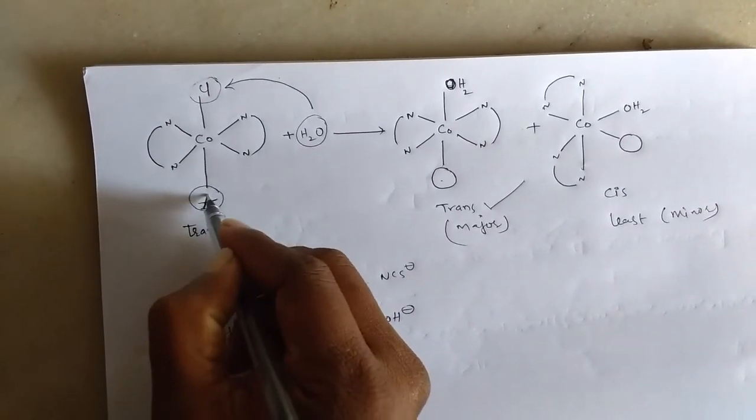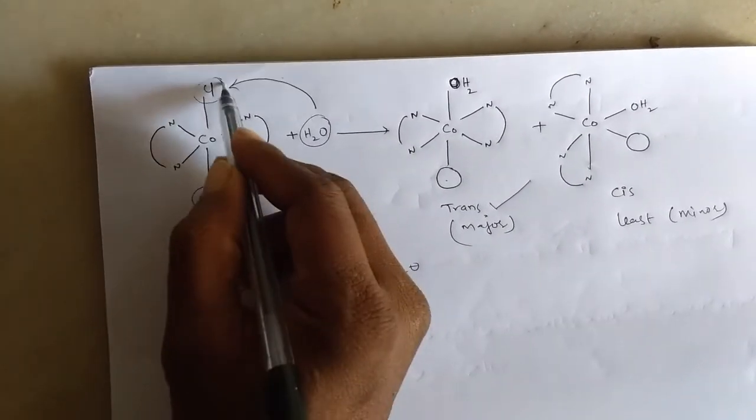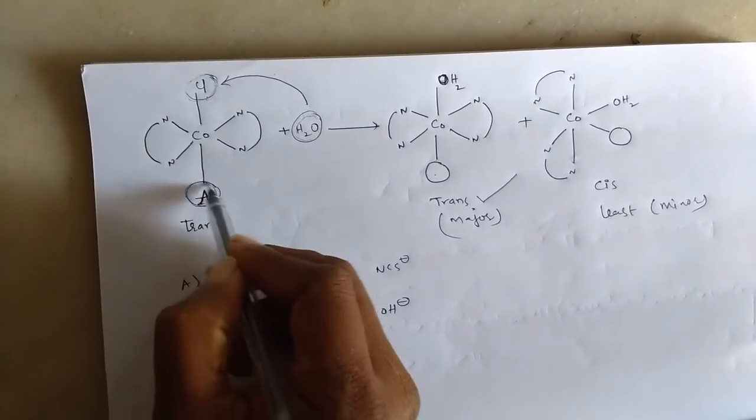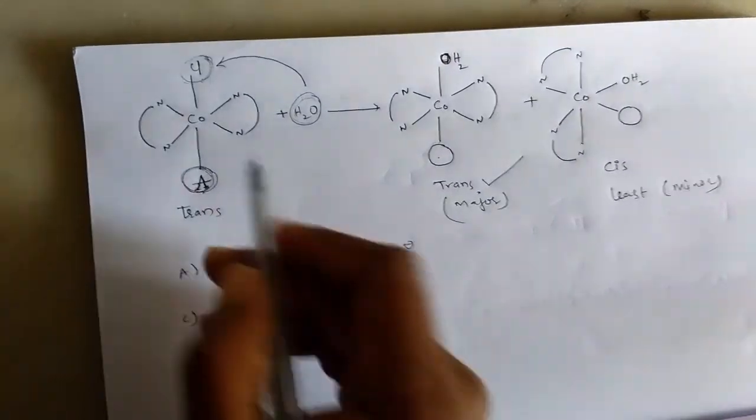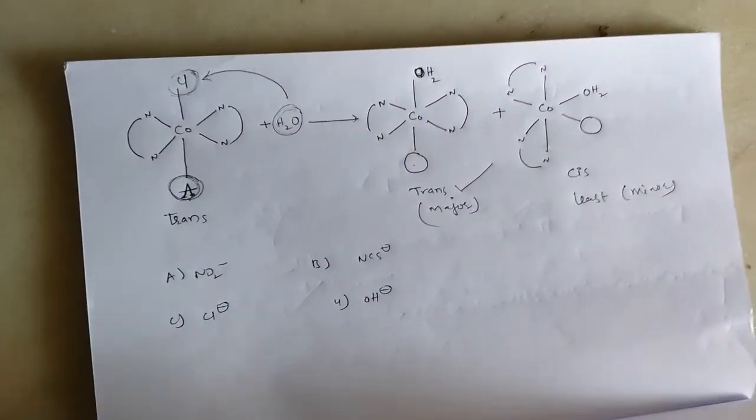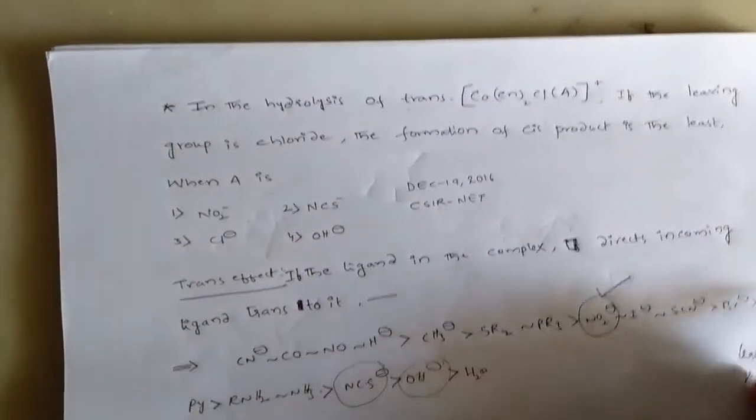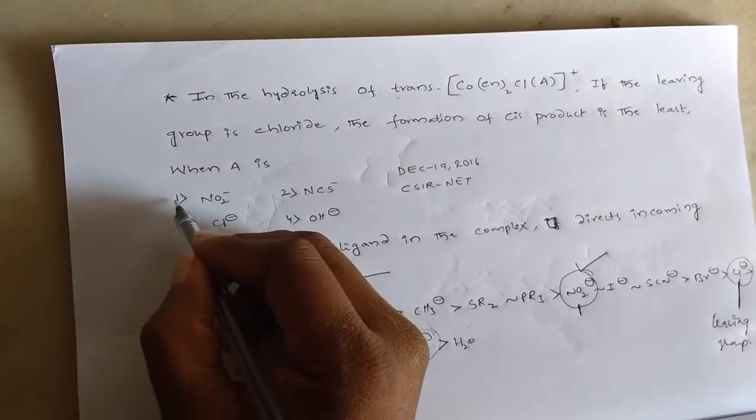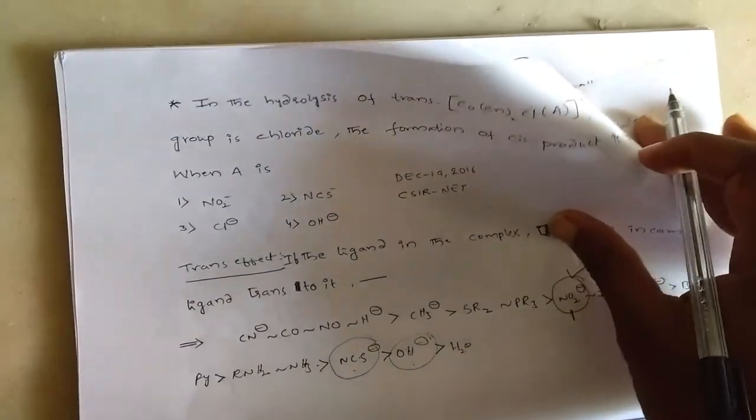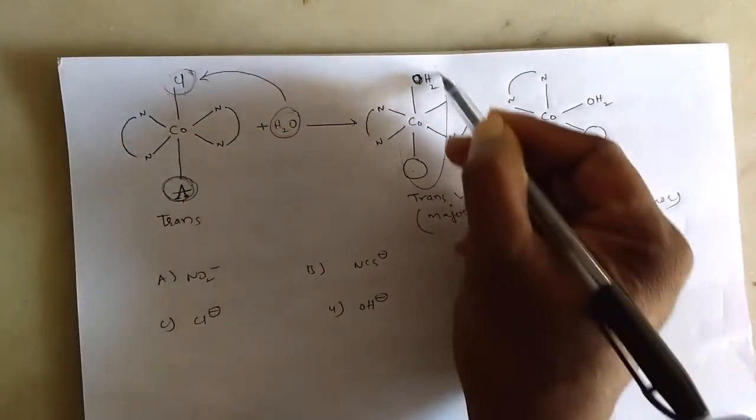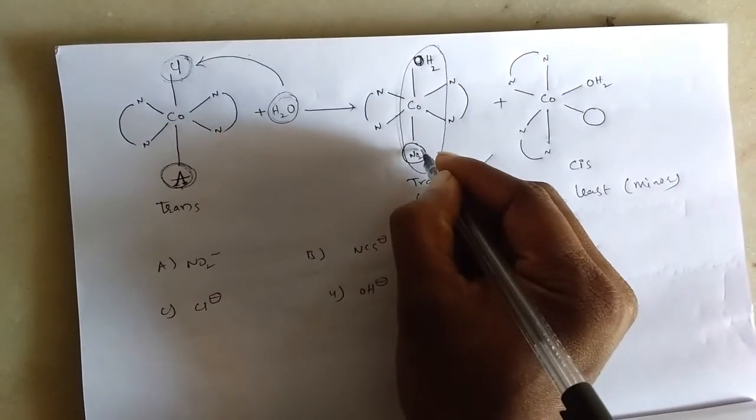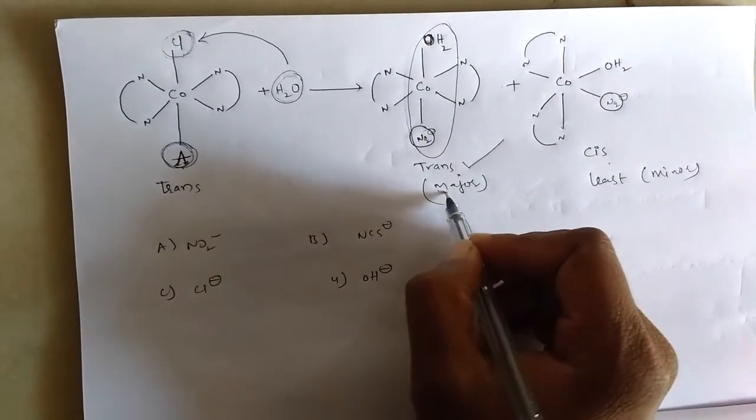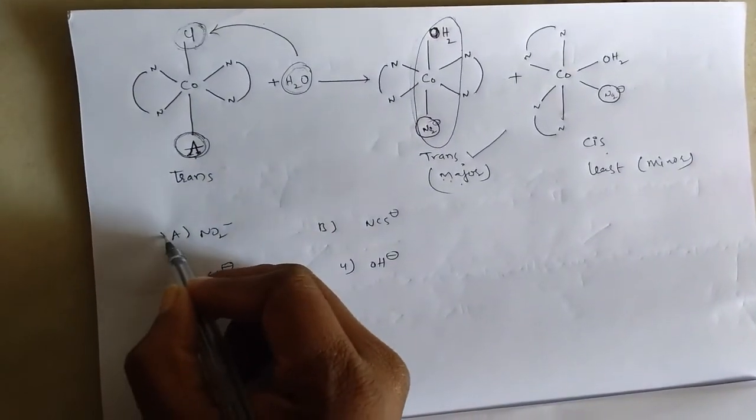A should have strong trans-effect than the chlorine. Then only A directs the incoming ligand towards trans to it. That means trans-effect of A ligand should be more when we compare with the chlorine. Then only the incoming ligand will occupy the trans position to A. What is the more strong trans-effect containing ligand when we compare with chlorine in the given series? That is simply NO2- has more trans-effect when we compare with NCS-, OH-, and Cl-. That's why NO2- has more trans-affecting ability and it directs incoming H2O towards trans to it. So here NO2- should be the ligand. Then only the cis product will be least and the trans product will be major. So that's why the answer is NO2-.